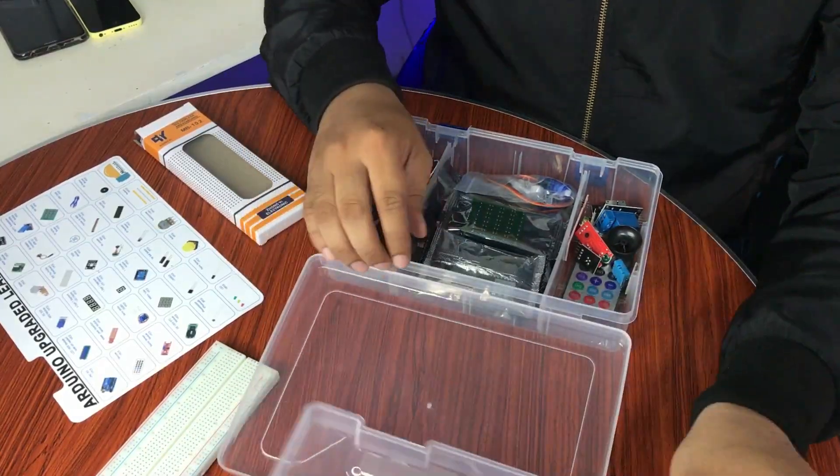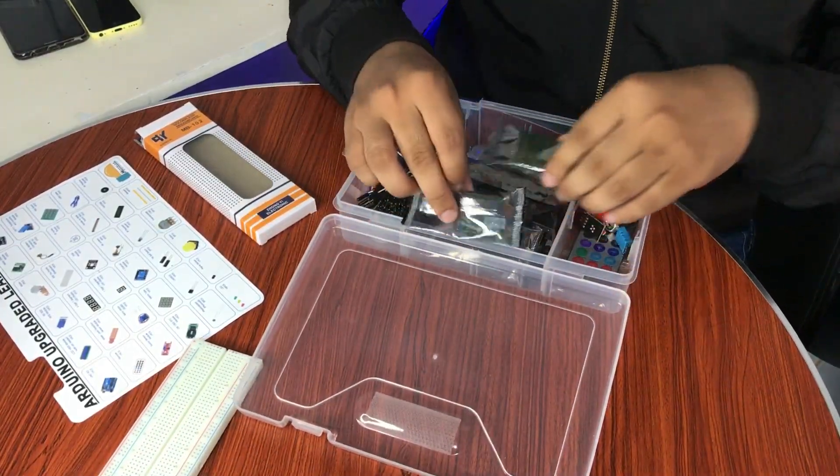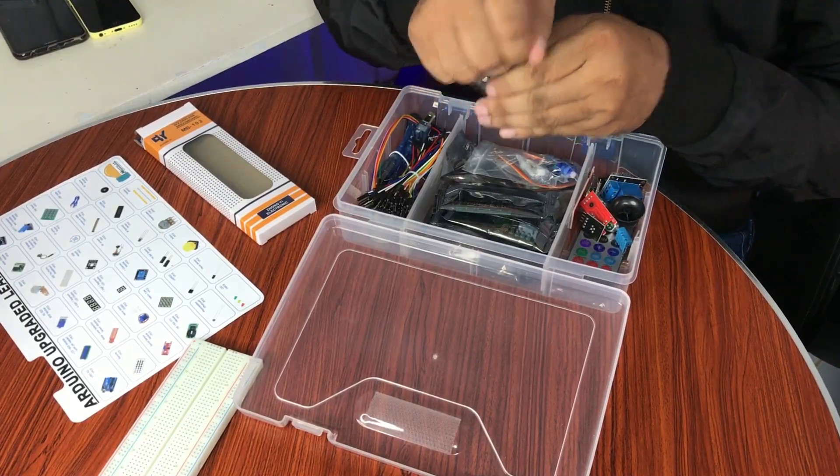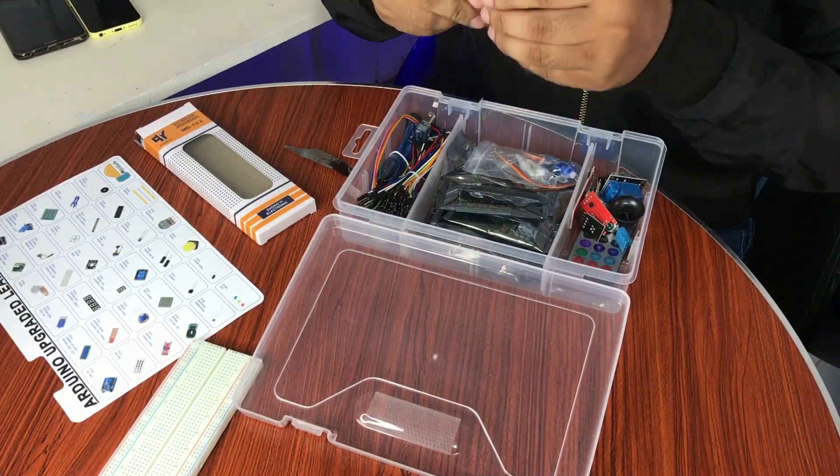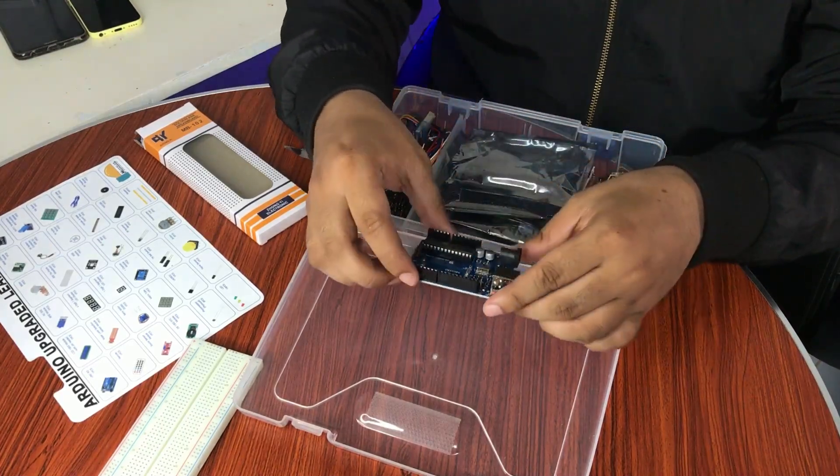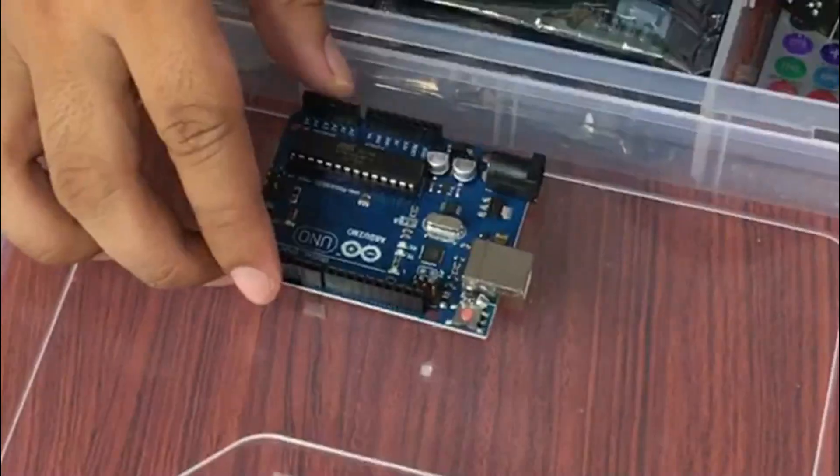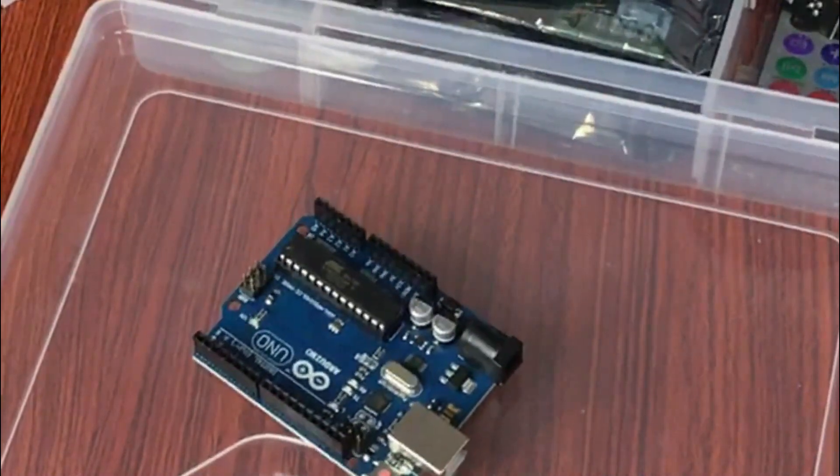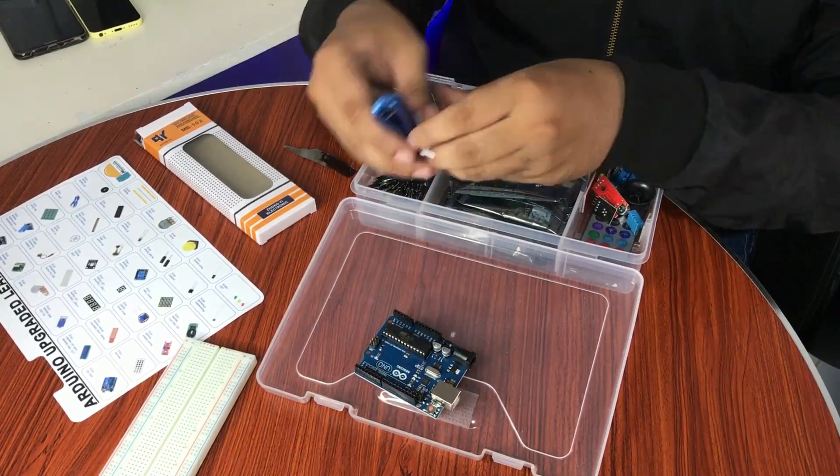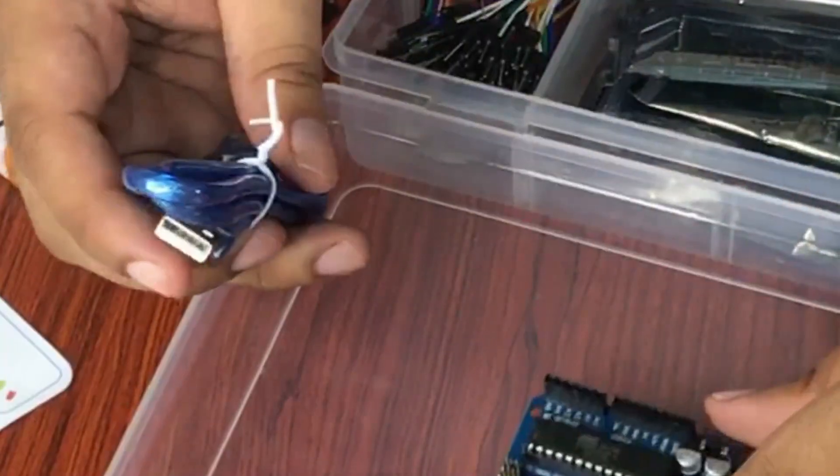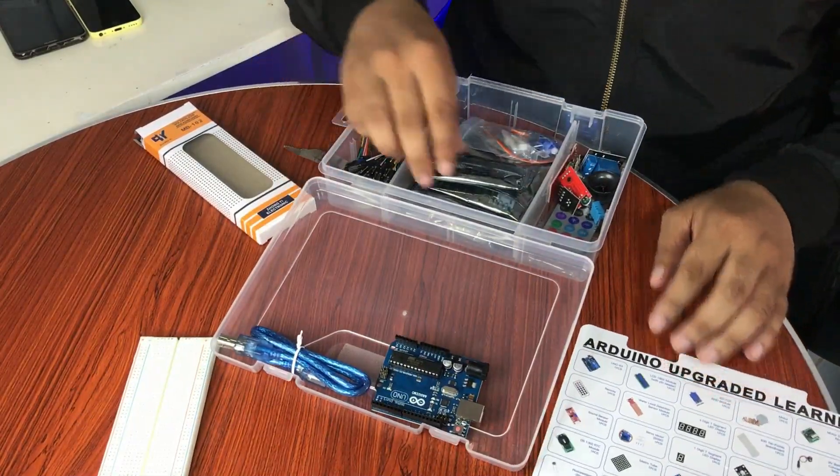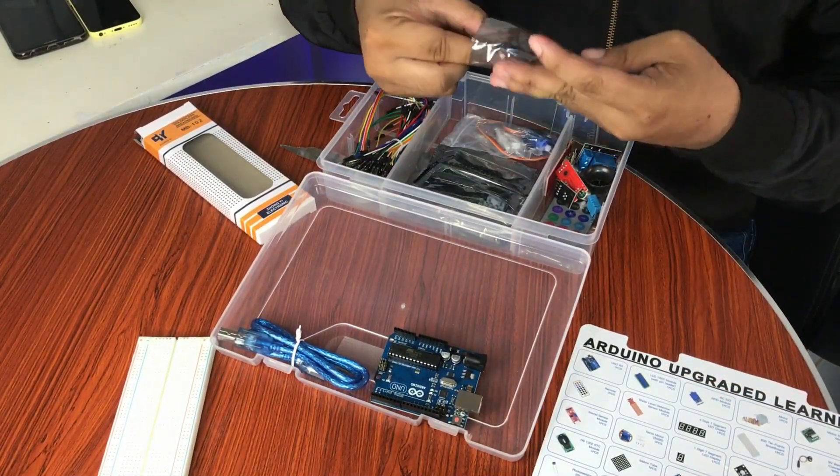So let's first see the Arduino Uno. So this is the Arduino Uno, Arduino Uno as you can see, and this is its connecting wire. When you want to upload the program here, we have here the LCD, so an LCD looks like this.